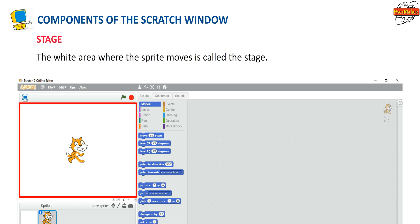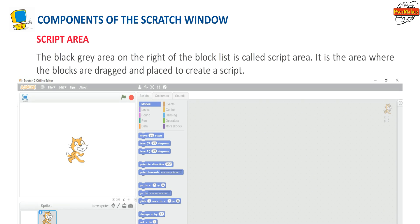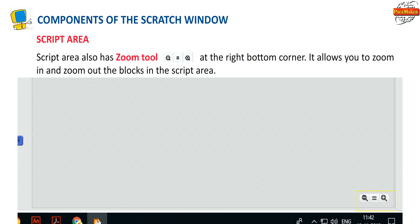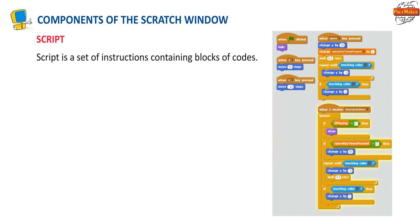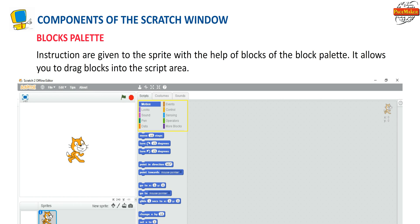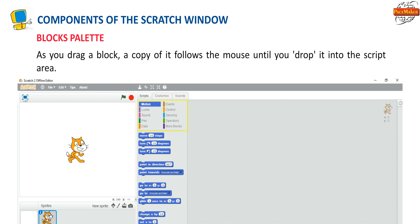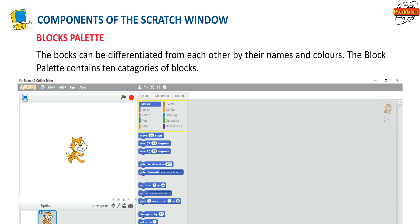The white area where the Sprite moves is called the stage. The black-gray area on the right of the block list is called the script area, where the blocks are dragged and placed to create a script. The script area also has a zoom tool at the bottom right corner. A Script is a set of instructions containing blocks of codes. Instructions are given to the Sprite with the help of the blocks palette, which allows you to drag blocks into the script area. The blocks can be differentiated by their names and colors.